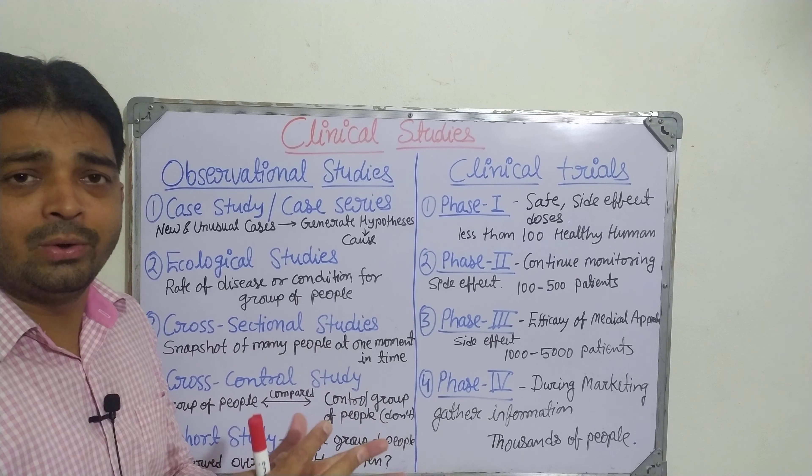The second type is ecological studies. As the name indicates, we study the rate of disease or condition for groups of people — for example, how Chinese people were affected by a particular virus or variant, and then when it spread to Iran, Iraq, UK, US, India, Pakistan, and other countries. We observe the rate of disease in winter season versus summer season.